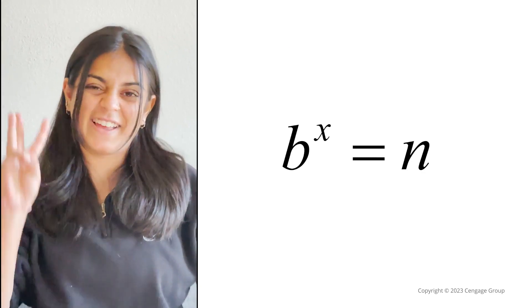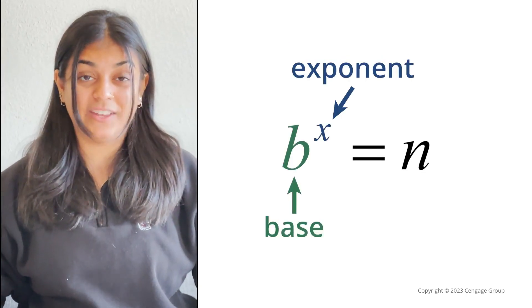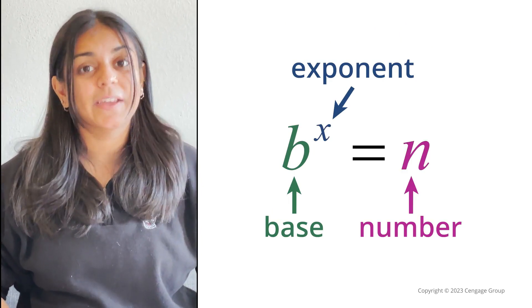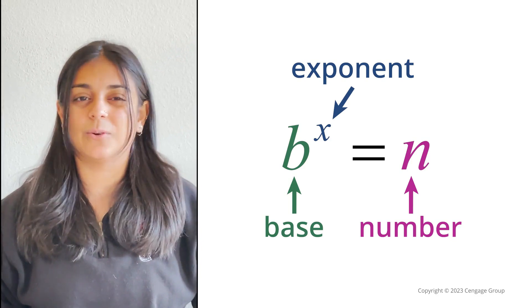An equation in exponential form has three parts: a base raised to an exponent and the number that it equals. It's important to note that the base in the example is positive and not equal to 1.